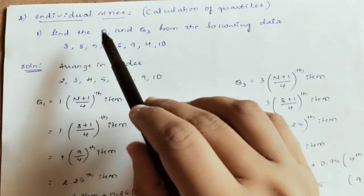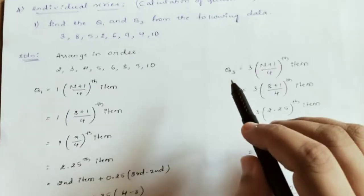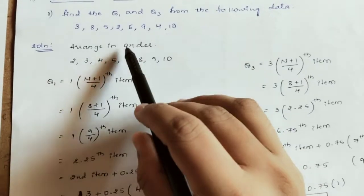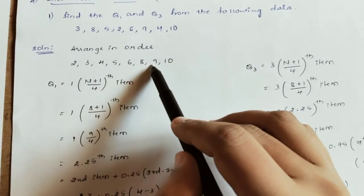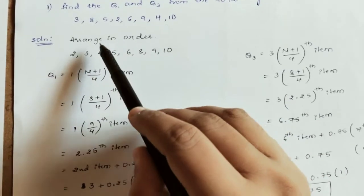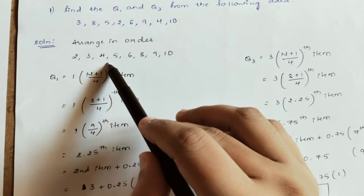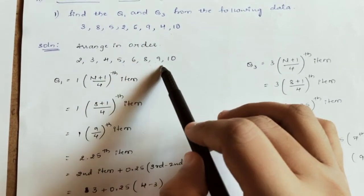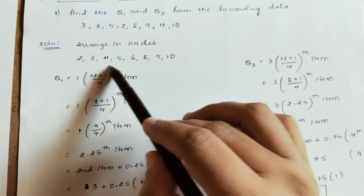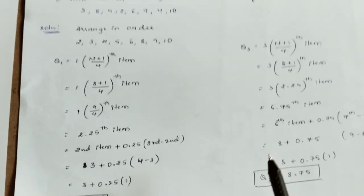So we need to arrange this series in ascending order. Let me arrange: 2, 3, 4, 5, 6, 8, 9, 10. This is the ordered arrangement.